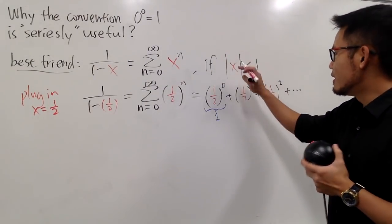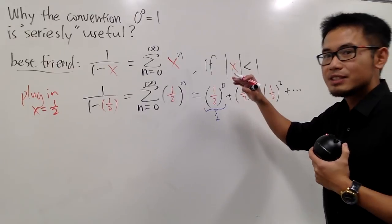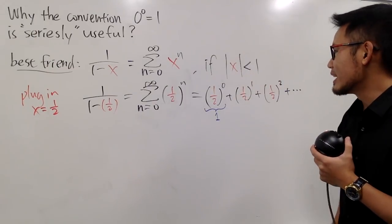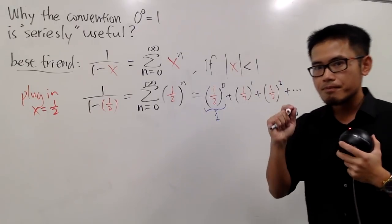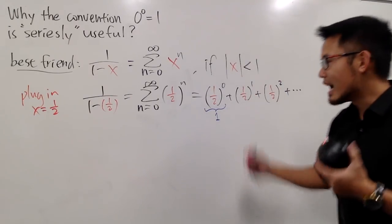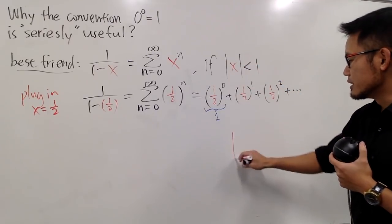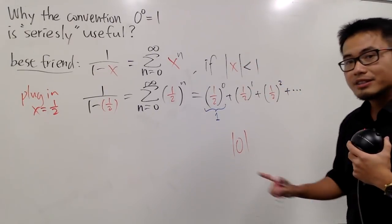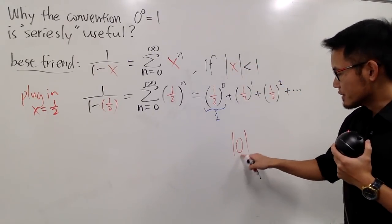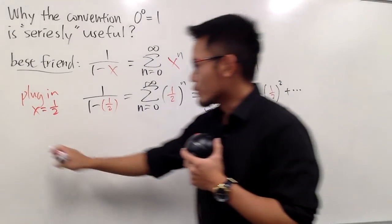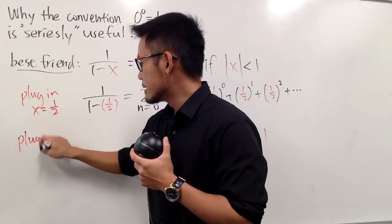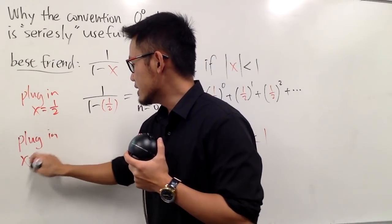Now, I can plug in 1 third, 2 over 5, negative 0.75, or something like that, because the absolute value of them are less than 1. Can I plug in 0? Why not? Because if I plug in 0, you see, absolute value of 0, this is not LOL, this is the absolute value of 0, it is, of course, less than 1, isn't it? So, right here, I will tell you, let's go ahead and plug in x is equal to 0.